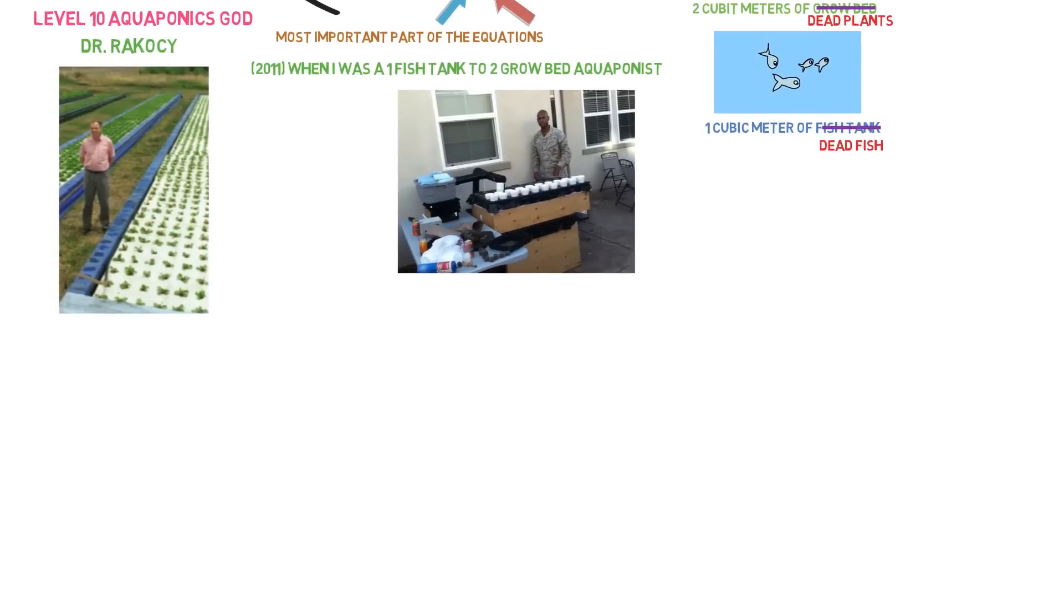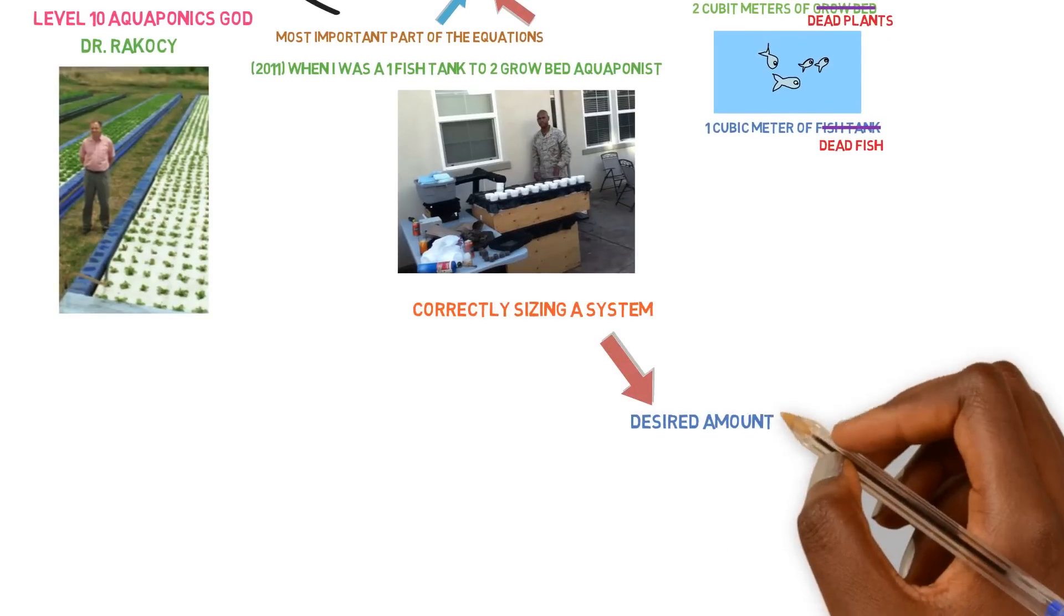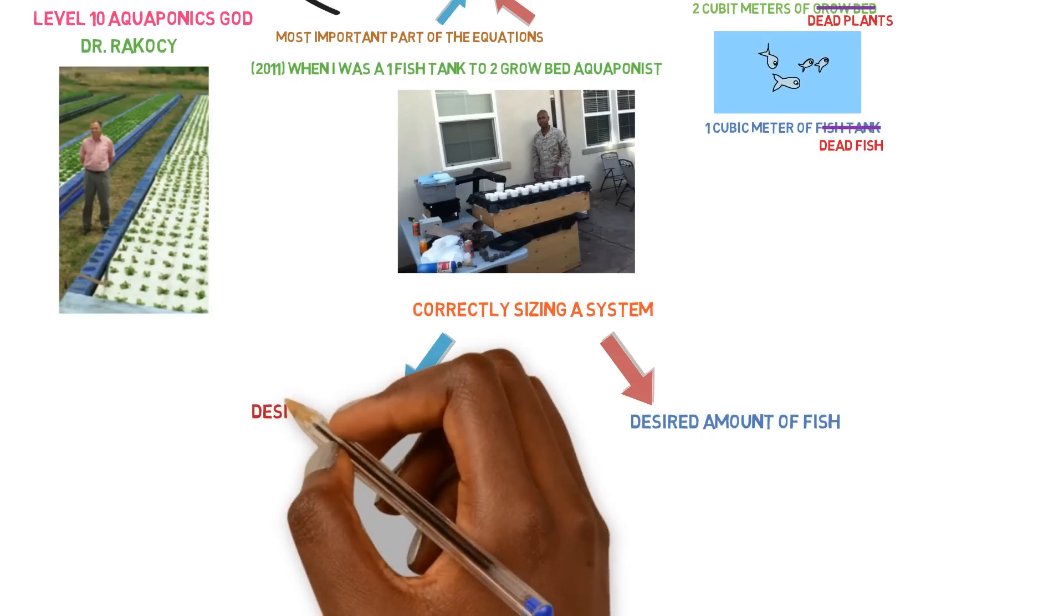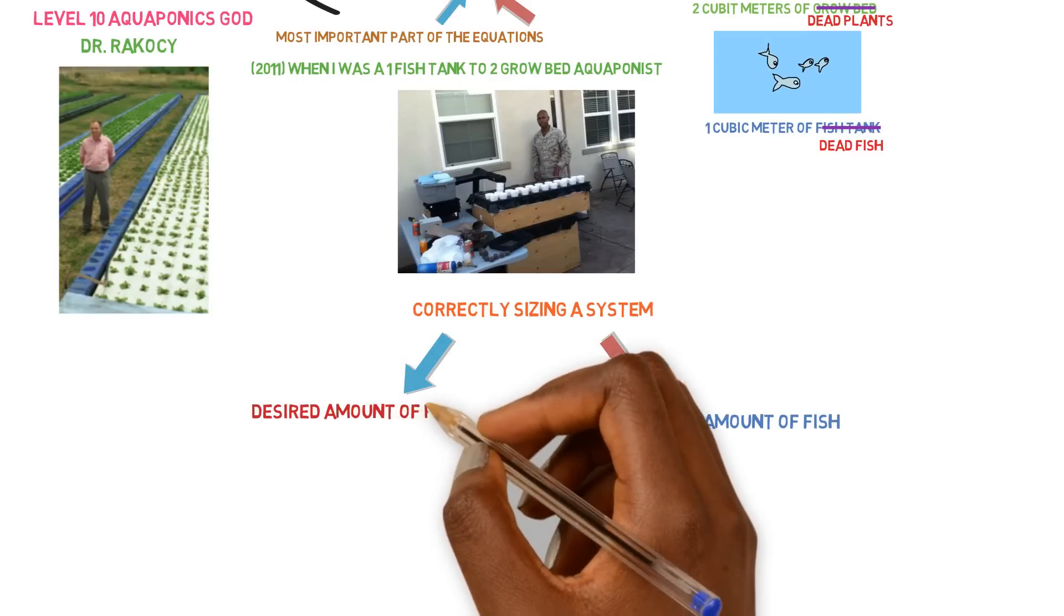So you can break down this equation in one or two ways. You can base it off of the amount of fish that you have and work backwards from there, or you can base it off the amount of plants that you have and then work backwards from there.